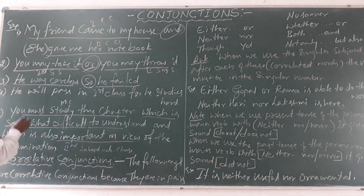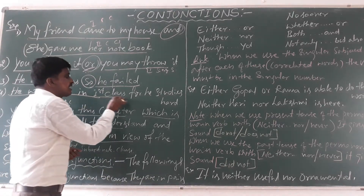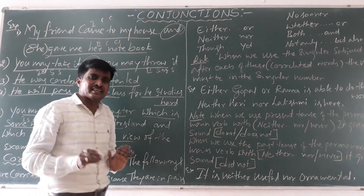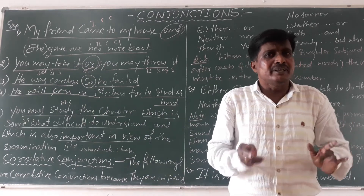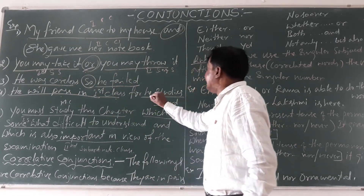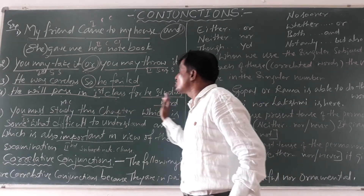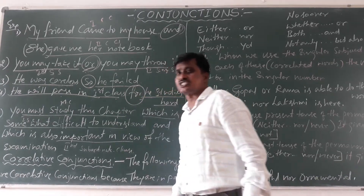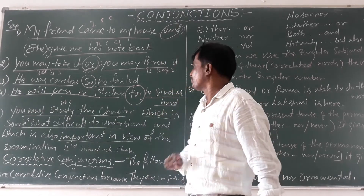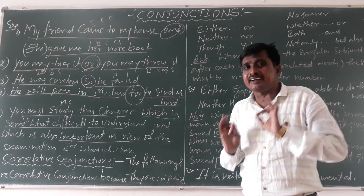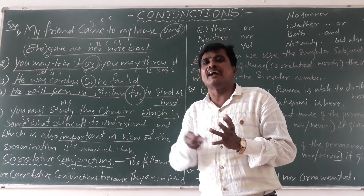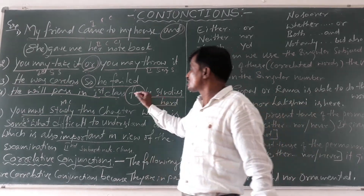The next example: 'He will pass in first class, for he studies hard.' 'He will pass in first class' is the first simple sentence. 'He studies hard' is the second simple sentence. These two simple sentences are joined by the coordinate conjunction 'for'. First simple sentence and second simple sentence joined together by the coordinate conjunction 'for'.